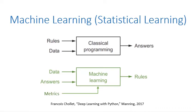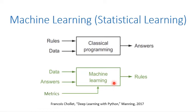Therefore, in classical programming, we need to write the code for each rule, each function by ourselves. Machine learning, on the other hand, doesn't need us to define all the rules — it can learn the rules automatically. In machine learning, we provide the data and sometimes the answers, and also an important metric which lets machine learning evaluate how good the learning is. The machine learning algorithms will then generate the rules automatically.